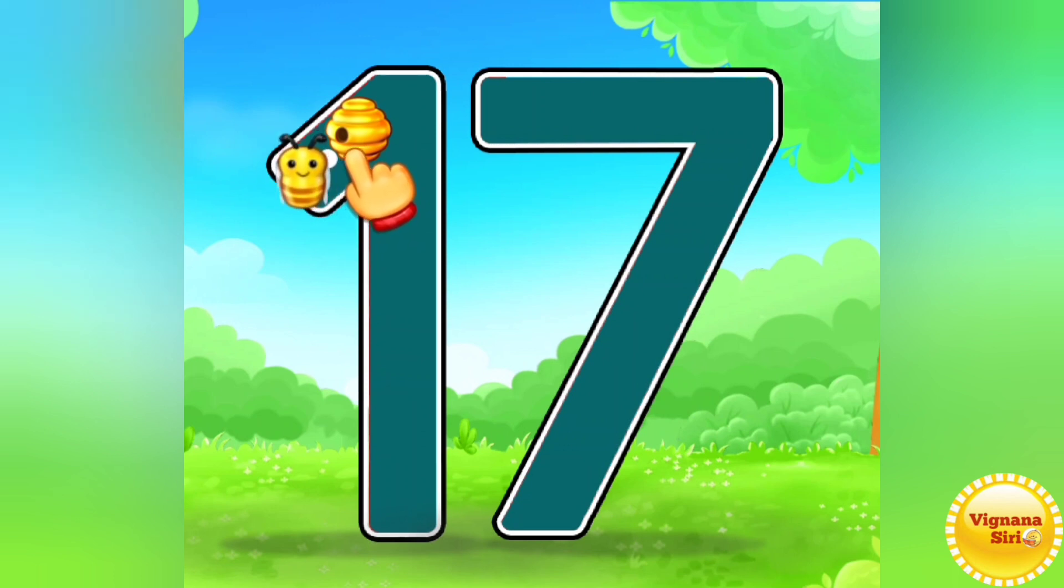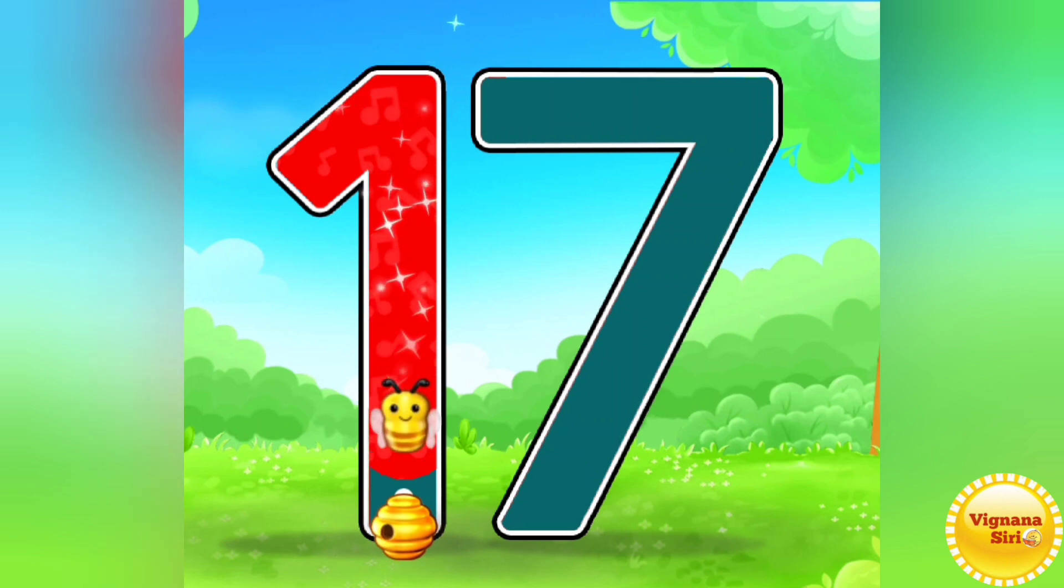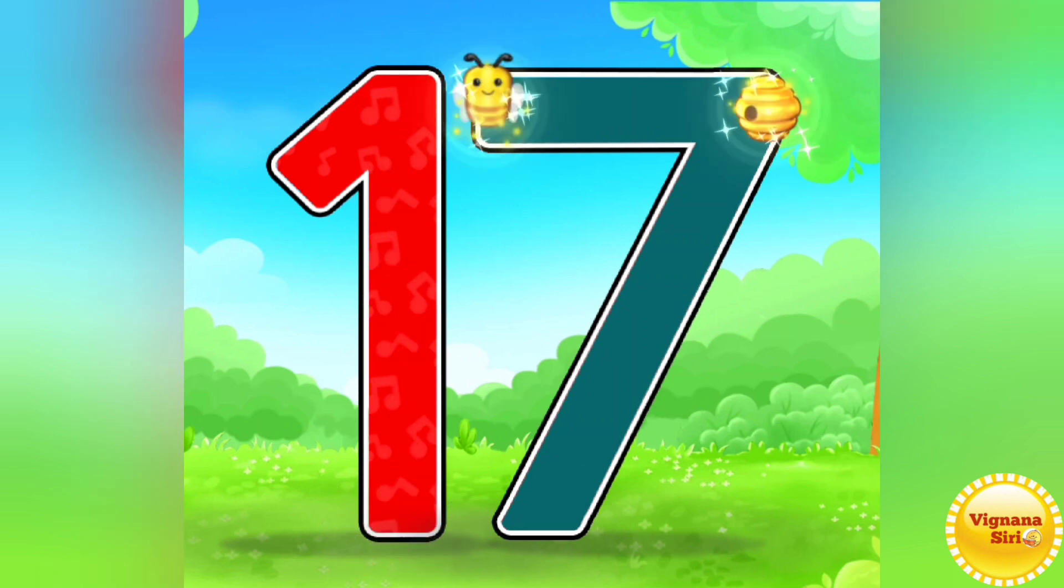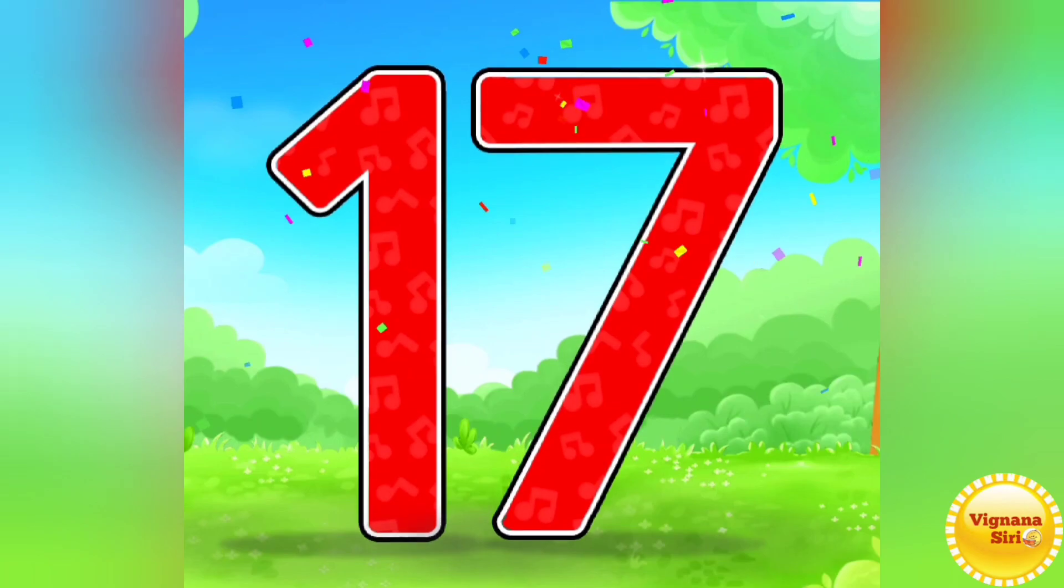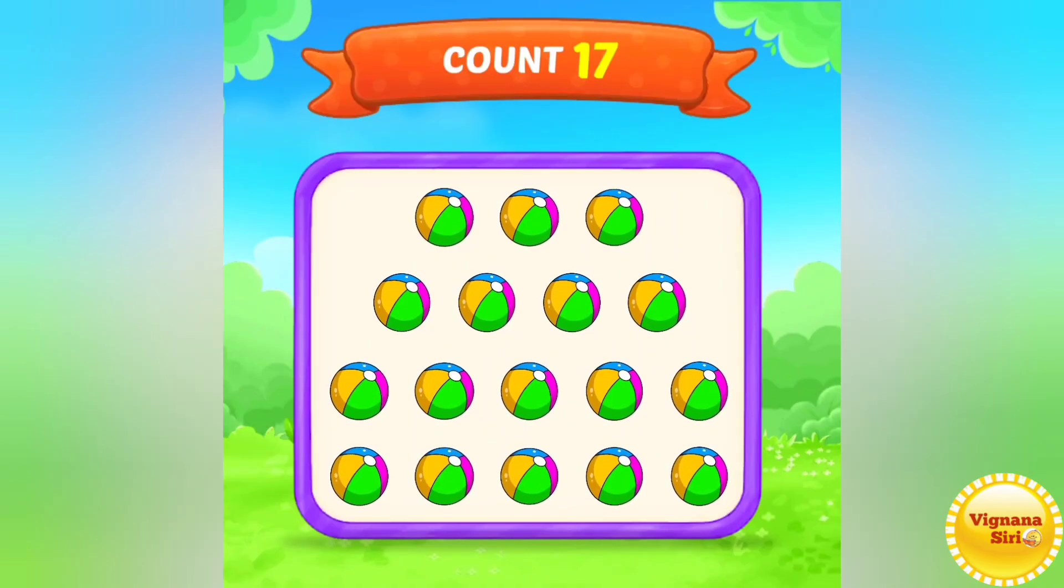So see here how it is showing. First write the number 1, a standing line, and number 7. This is called 17. So if you observe the word itself saying 17. It is nothing but 1 and 7. We have to write 16, 6 and 1 like that.